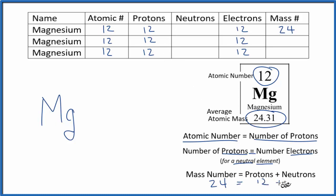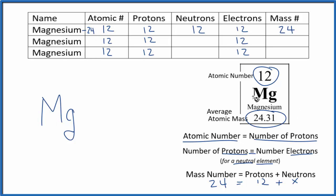Mass number 24 equals the number of protons — we said that was 12 — plus the neutrons. Something plus 12 gives 24, so that's 12 neutrons for this isotope of magnesium. We call this isotope magnesium-24. If you took a sample of magnesium, a block of magnesium, about 80% of the atoms would have a mass number of 24, and that makes sense because the average atomic mass is pretty close to 24.